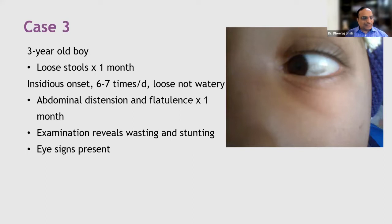On examination, the weight for height is minus 2.1 z-score and height for age is minus 2.5 z-score, indicating wasting and stunting, but not severe wasting or severe stunting. You can also see the picture of the child's eye.